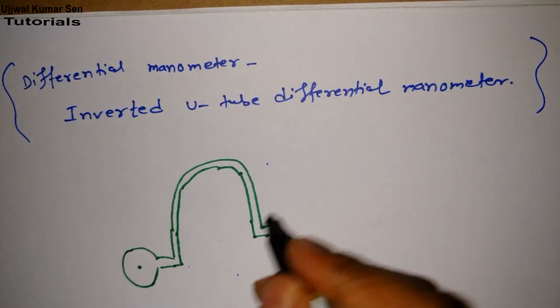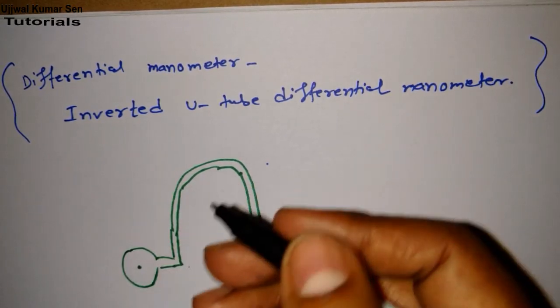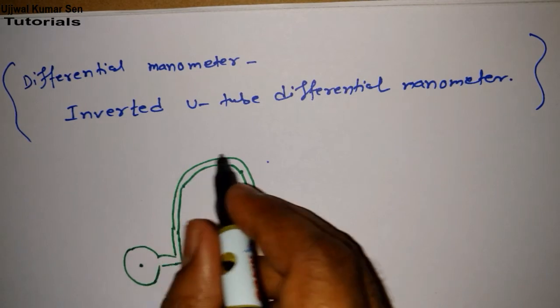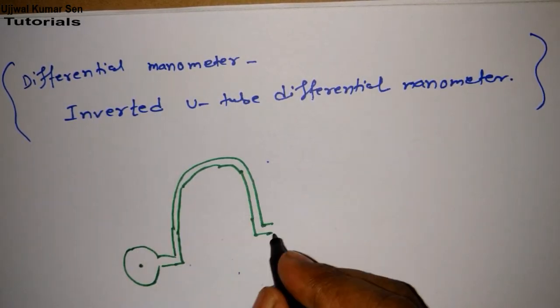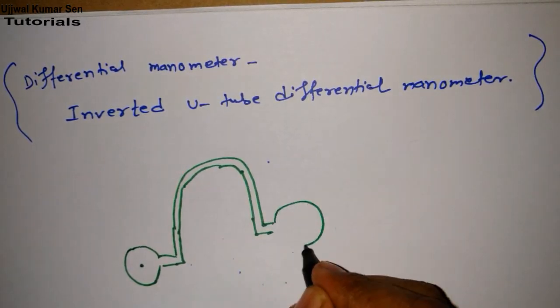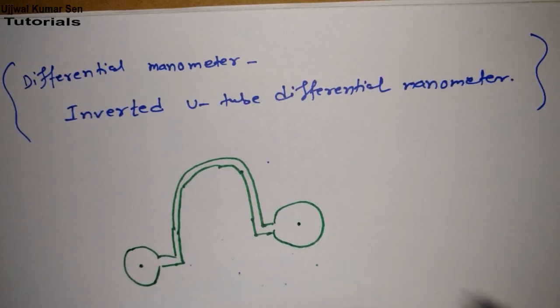It's inverted because the U-shape is on top - the position is changed. That's why it is known as inverted U-tube differential manometer.